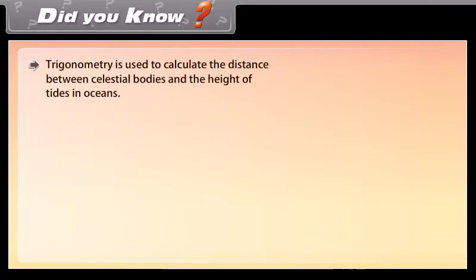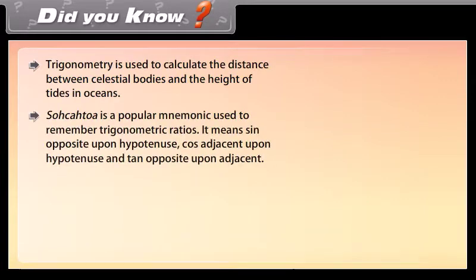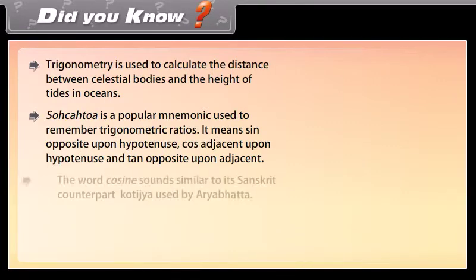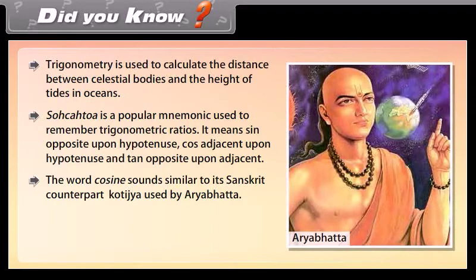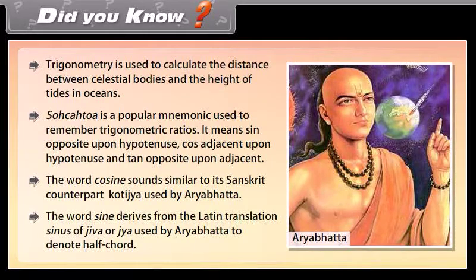Did you know? Trigonometry is used to calculate the distance between celestial bodies and the height of tides in oceans. SOH-CAH-TOA is a popular mnemonic used to remember trigonometric ratios: sine equals opposite upon hypotenuse, cosine equals adjacent upon hypotenuse, and tangent equals opposite upon adjacent. The word cosine sounds similar to its Sanskrit counterpart kotijya, used by Aryabhata. The word sine derives from the Latin translation sinus of jiva or jya, used by Aryabhata to denote half-chord.